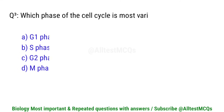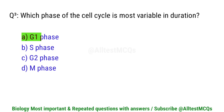Question number 3. Which phase of the cell cycle is most variable in duration? Right option is A. G1 phase.